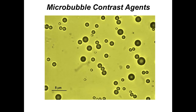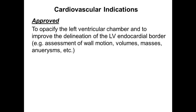Microbubble contrast agents are generally gas-filled particles that circulate through the bloodstream. This microscopy illustrates a contrast agent. Note on the lower left is a scale showing a 5-micron bar. Most of these micro-bubble agents developed for human use are smaller than 5 microns to allow them to pass through the smallest blood vessels of your body. Ultrasound contrast agents have been approved worldwide for various applications.